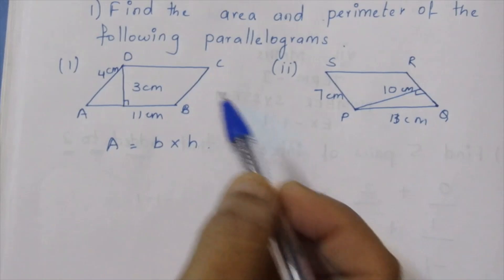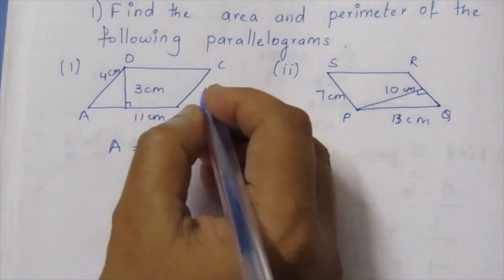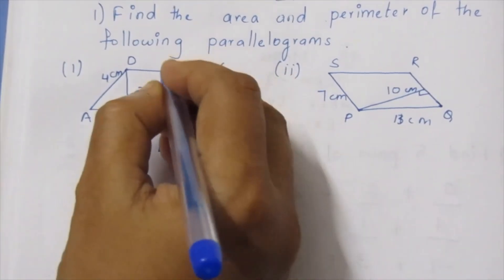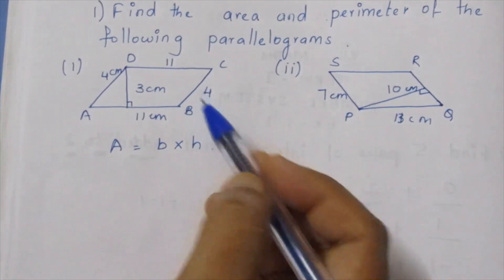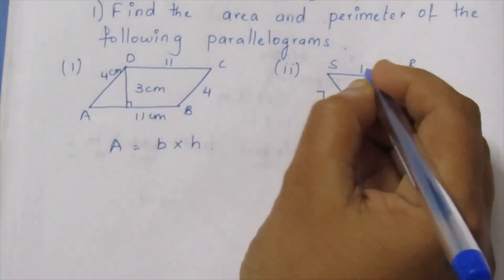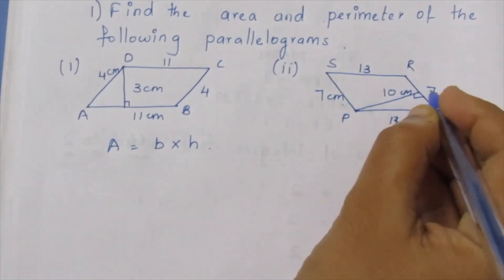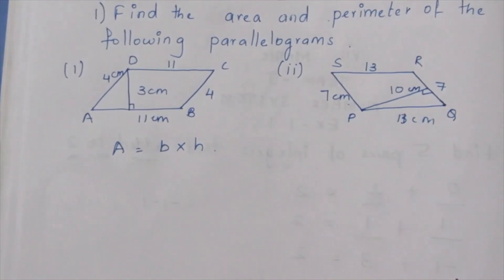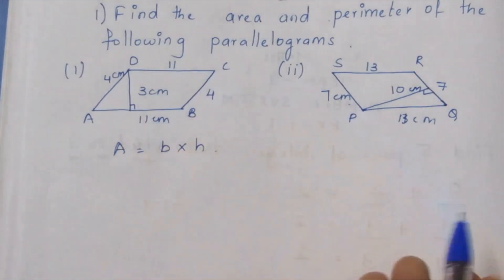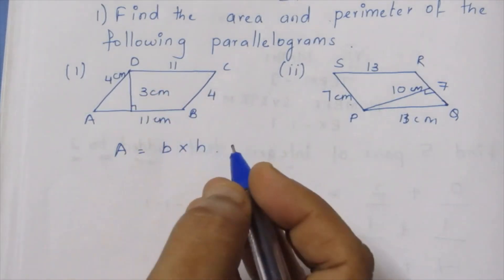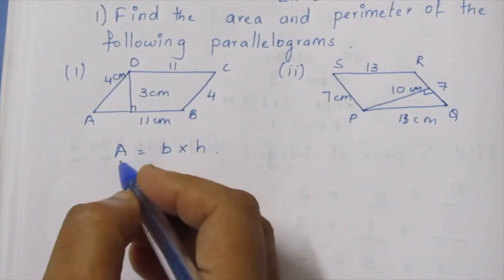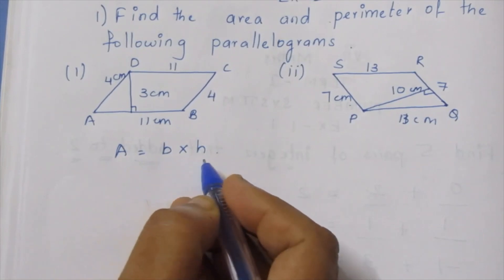Parallelogram opposite sides are equal: 4 here is 4, 11 here is 11. Opposite sides are equal: 13 here is 13, 7 here is 7. Opposite sides are parallel. We will add the perimeter. Now area: base into height.